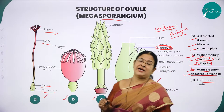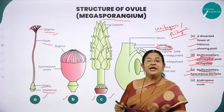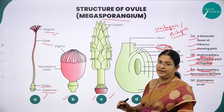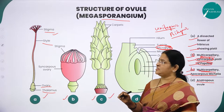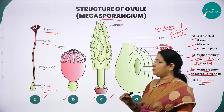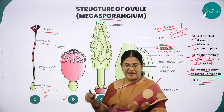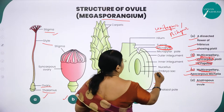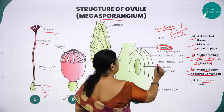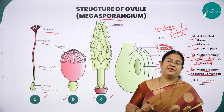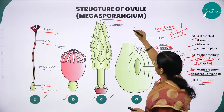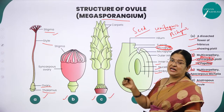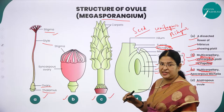The ovule is an integmented megasporangium located within the ovary. It consists of three very important parts: embryo sac, nucellus, and integuments. After fertilization, this ovule will develop into a seed. The ovule is attached to the placenta by means of a stalk-like structure called the funicle.